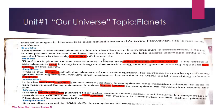So students, a satellite is an artificial body placed in orbit around the Earth, Moon, and other planets to collect information and for communication.